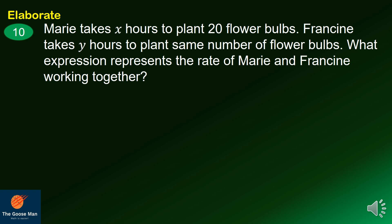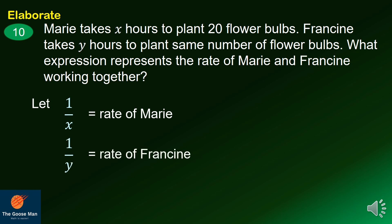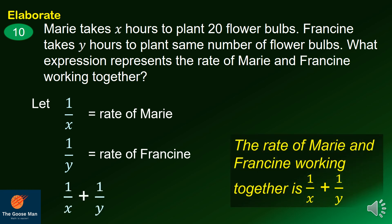Marie takes x hours to plant 20 flower bulbs and Francine takes y hours to plant the same number of flower bulbs. What expression represents the rate of Marie and Francine working together? The rate of Marie is 1 over x and the rate of Francine is 1 over y. Working together, their combined rate is 1 over x plus 1 over y.